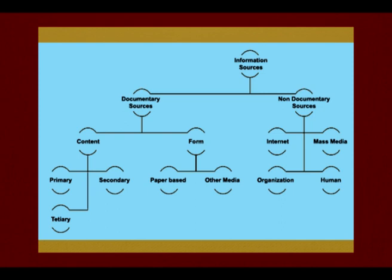When we talk about documentary sources, it is divided further into content and form. Content is further divided into primary, secondary and tertiary, which are going to be dealt in detail. Form includes paper-based and other media. Non-documentary sources include internet, mass media, organizations and human.